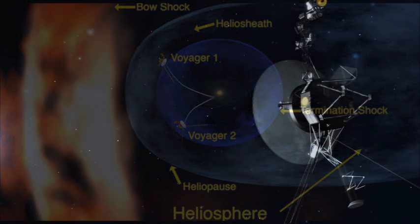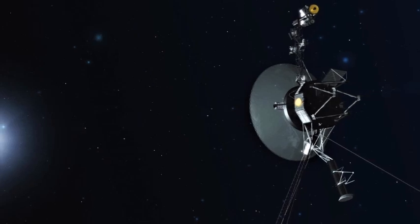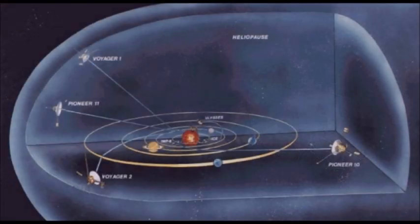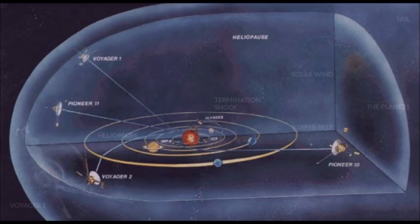Traveling at speeds of more than 35,000 miles per hour, the Voyagers travel about 900,000 miles farther from Earth each day, a distance equal to roughly 36 times Earth's circumference.